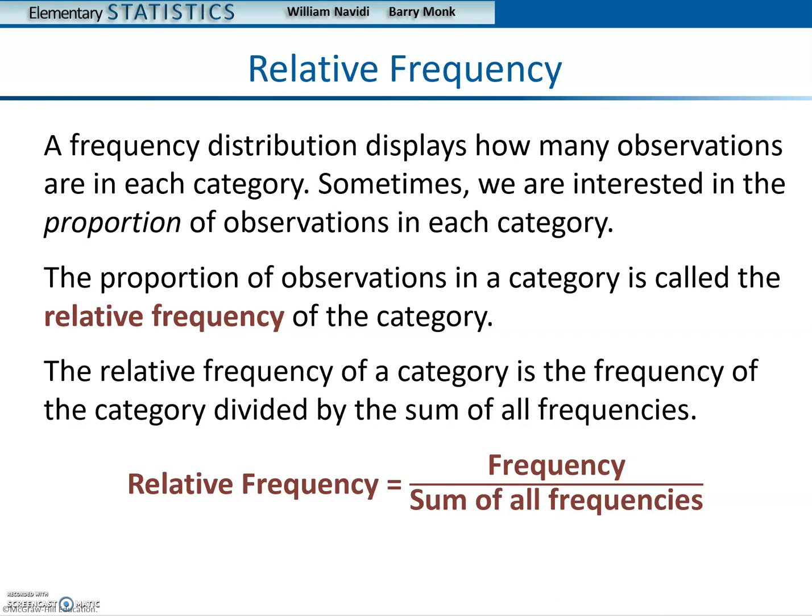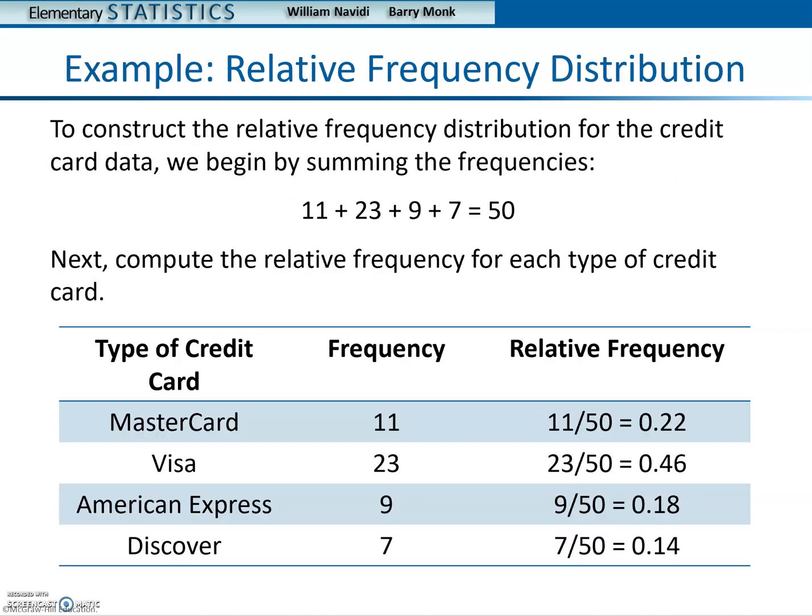So the relative frequency is found by taking the number of how many people had the MasterCard, for example, and then dividing it by the total number of people that actually did use credit cards. And you would do that for each one.